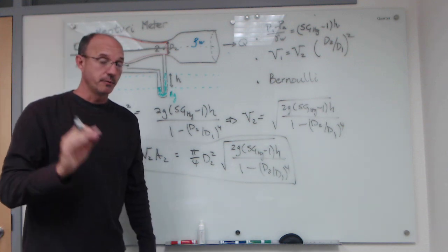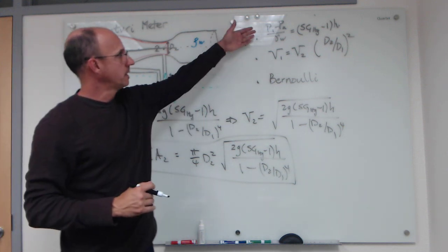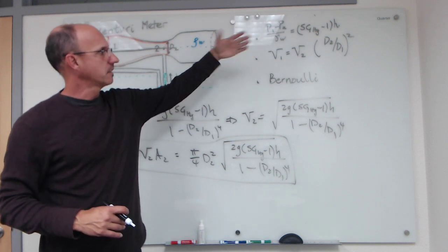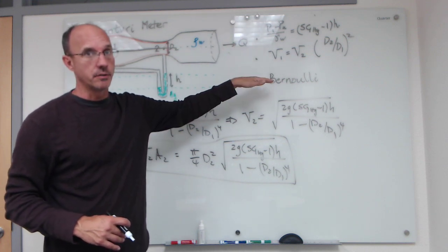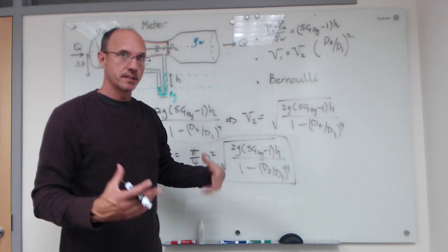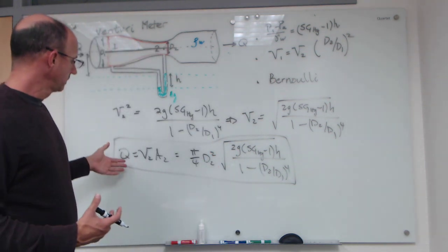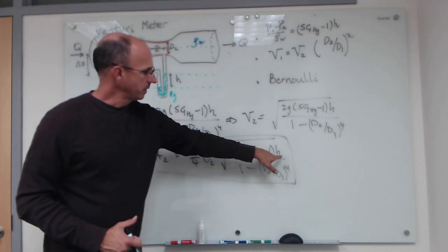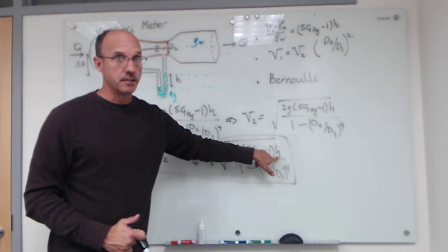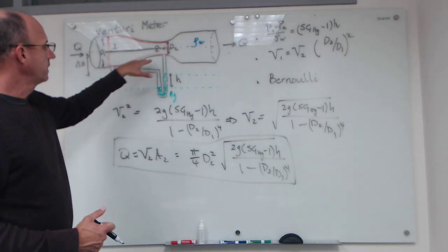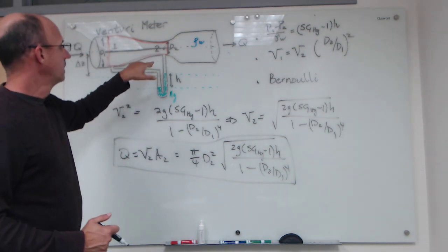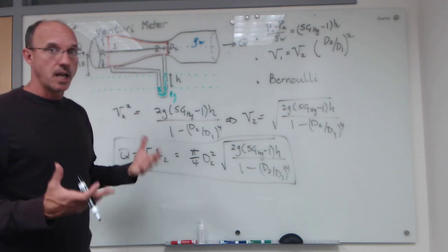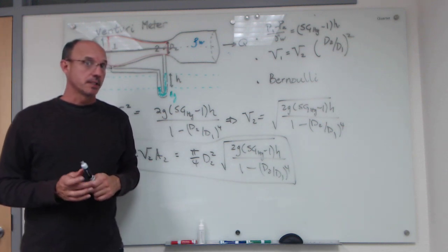This derivation combined three ideas — a static pressure analysis, a continuity analysis, and the Bernoulli equation — to produce an analytical expression for volumetric flow rate in a pipe based only on the manometer reading h. That is why Venturi meters are used in practice: they provide a straightforward and reliable way to obtain discharge readings in pipelines.